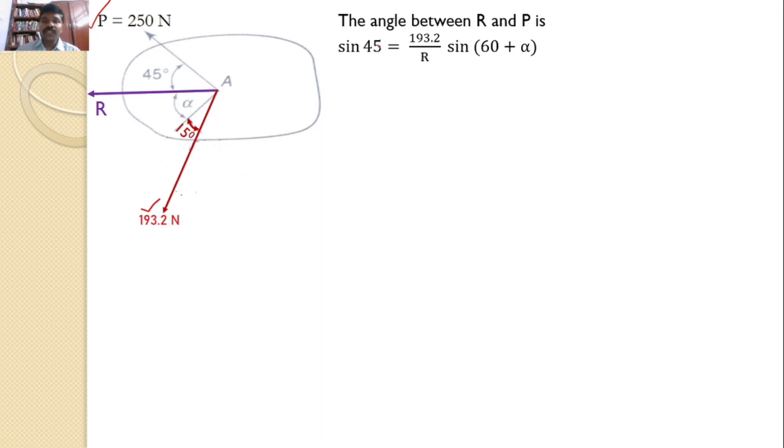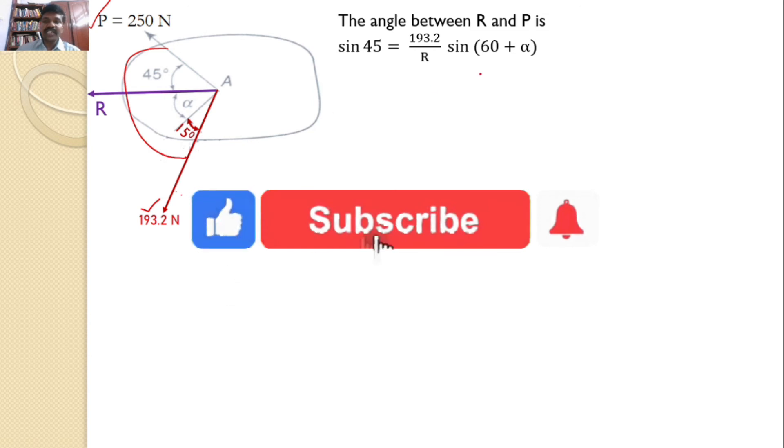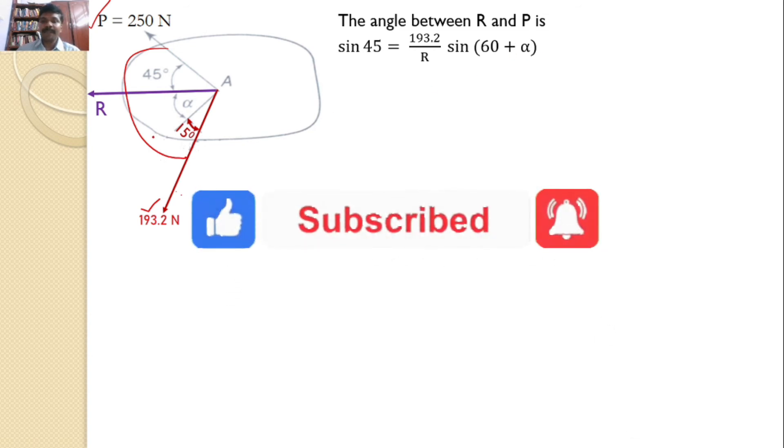I will use this formula. Let the angle between R and P is 45 degrees. That is given. So, I can substitute in the formula that sin 45 equals 193.2 by R into angle between these two forces that is sin 60 plus alpha.